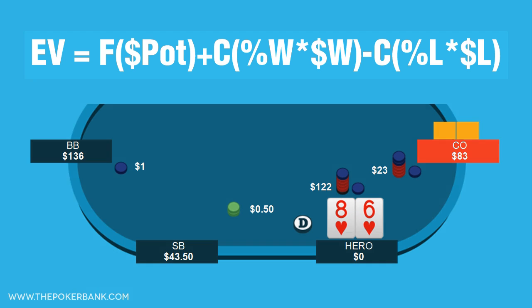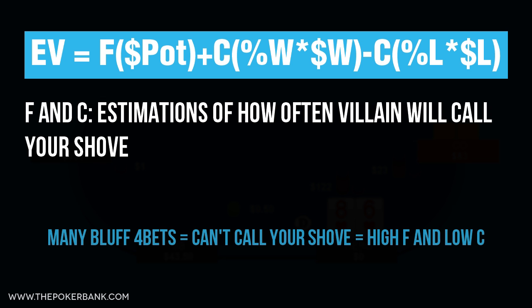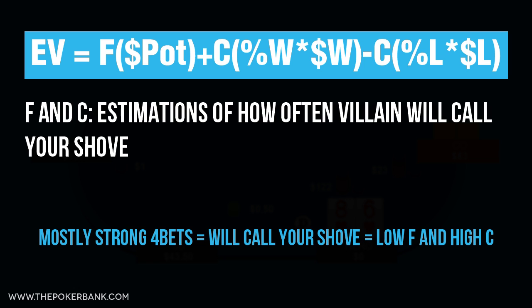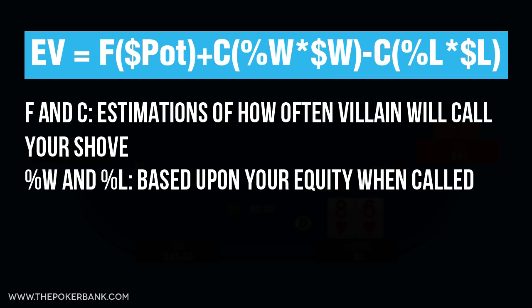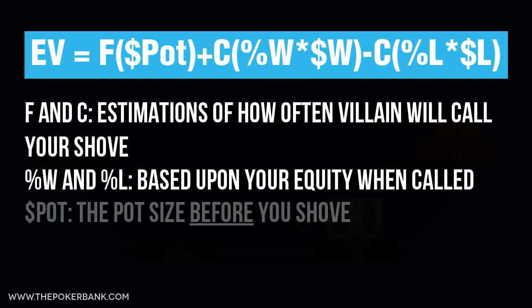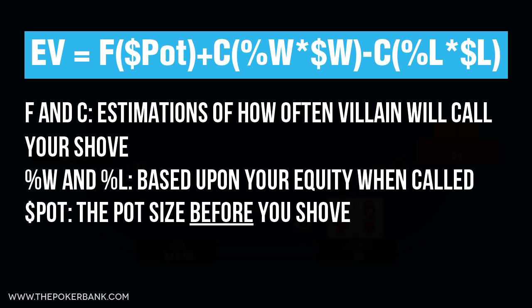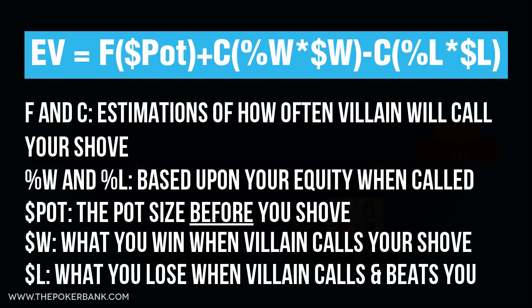Let's review how to get each number quickly. F and C are estimations based upon how often you think villain will call your shove. If you think he was 4-bet bluffing a ton and thus wouldn't be able to call your shove often, then F would be a very large percentage. Conversely, if villain was 4-betting a strong range and would call your shove often, then F would be small and C would be quite large. Percentage W and percentage L are based upon equity, which we can calculate using a free program like Equilab. The percentage W is your equity against the range villain would open, 4-bet, and call your shove with. The pot is the size of the pot before you shove, money W is what you would win the times you get called and win, and money L is what you would lose the times you get called and villain wins.